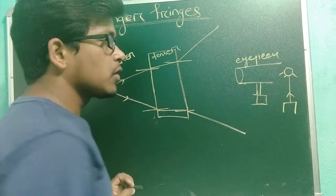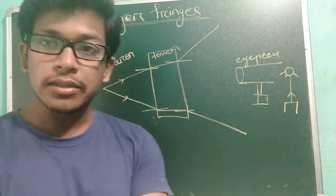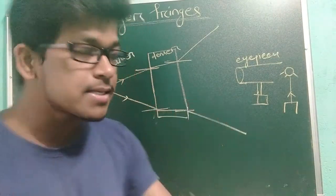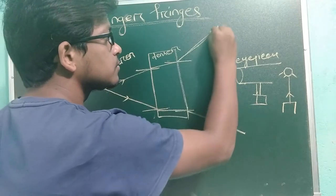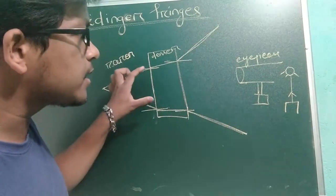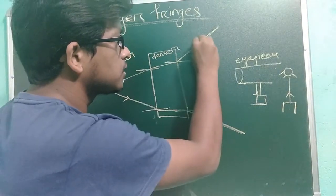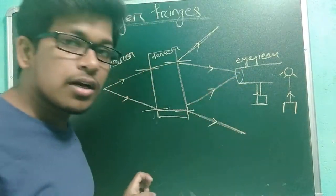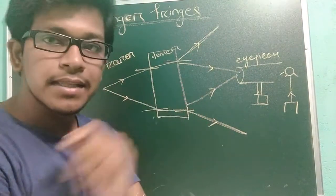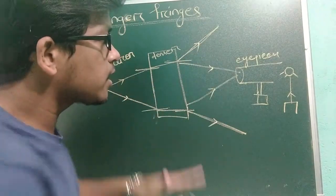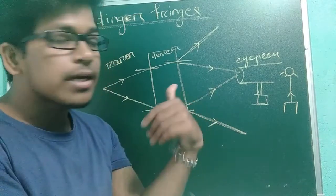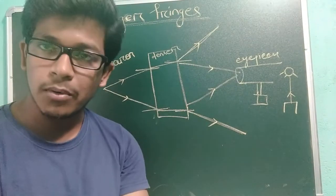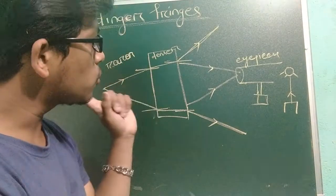While we studied about the thin film, we are not getting any type of problem. But what problem are we facing here? The light rays are coming and going outside. Whenever the light will come inside the eyepiece, then only we can observe the fringes. But in this case the light rays are going far apart from each other, so we can't get our fringes. That's the problem in case of a thick parallel film.